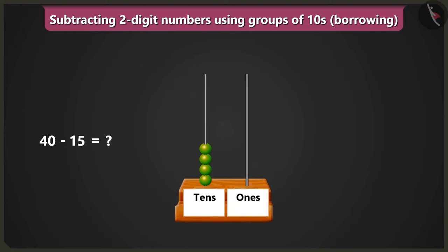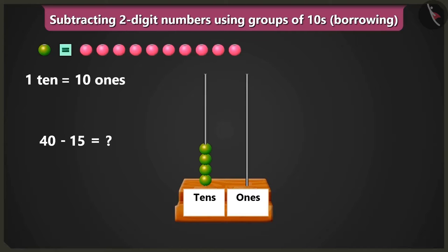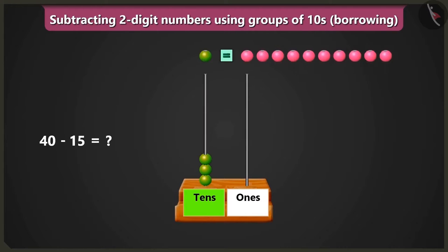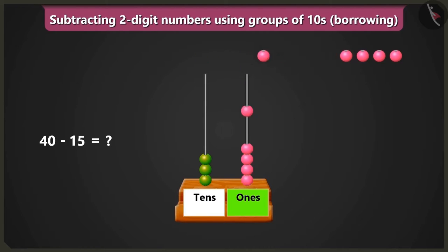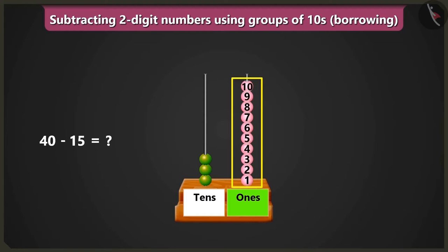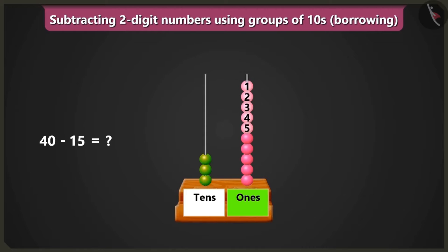Bubbly, we know that one ten means ten ones. So we will borrow one ten from four tens in the box of tens. We will remove one bead from the box of tens and put ten beads in the box of ones. Now, to subtract fifteen from forty, first of all from the box of ones we will remove one, two, three, four and five beads. So one, two, three, four and five beads would remain.